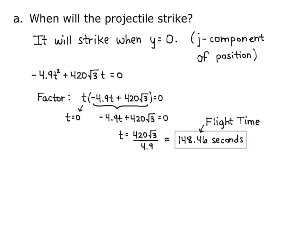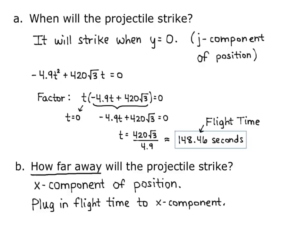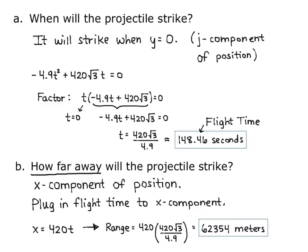Part b asks how far away the projectile will strike. We know when it strikes, and how far away will be the x component of position. We'll plug in the flight time to the x component of position. We know x equals 420t, so the range equals 420 times the flight time. Using the exact flight time of 420 square root of 3 over 4.9, we put that into the calculator and round to the nearest meter, getting 62,354 meters — that's how far away the projectile will strike the ground.